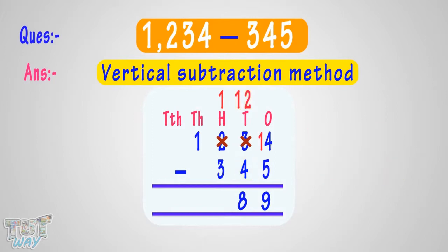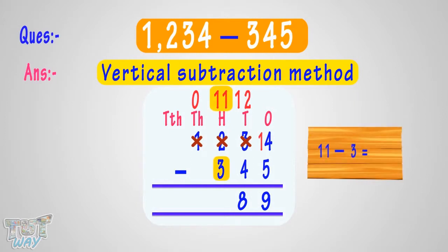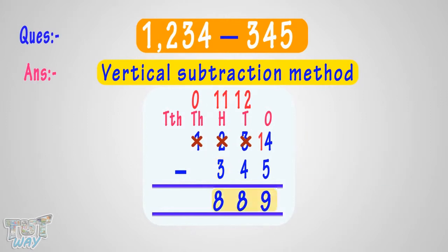We can't subtract 3 from 1. So borrow 1 from the 1000's place. Cross 1, make it 0. Make 1 at 100's place into 11. 11 minus 3 equals 8. Write 8 in the difference at 100's place. We got the answer — 889 is our answer.